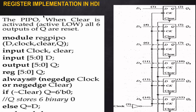This is the HDL code corresponding to the PIPO circuit. When the clear input is active, all flip-flop outputs are set to zero. When clear is inactive, whatever value is available in the input array d is directly transferred to the output port — that is the meaning of parallel input parallel output.